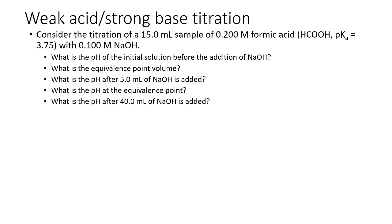Let's start with question A: what is the pH of the initial solution before the addition of NaOH? This problem is a little more work because this is a weak acid. Like in the previous strong acid example, you are working a problem where you haven't added any base, so you don't have to worry about the titration stuff. This is just: what is the pH of a weak acid with a 0.2 molar concentration and a pKa of 3.75? Think of it like a problem from last chapter.